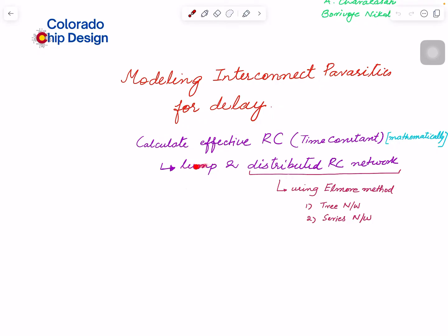We'll look into how we have a lumped R and C model, what delay we get from that, what delay equations or expressions we get. Then we'll look into distributed RC network and use the Elmore method of getting a delay or time constant for distributed RC network.